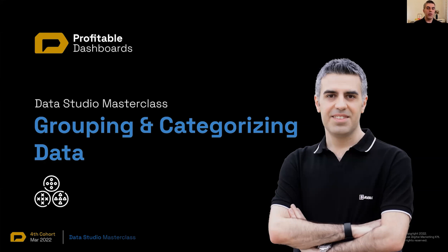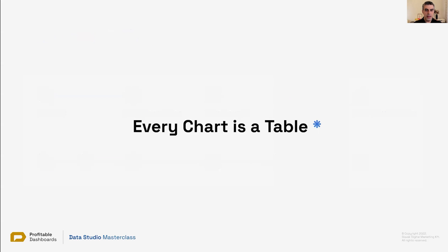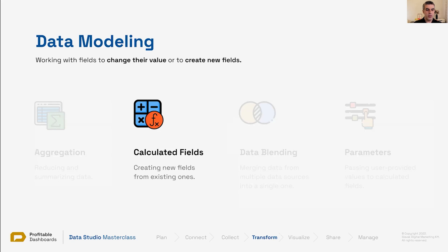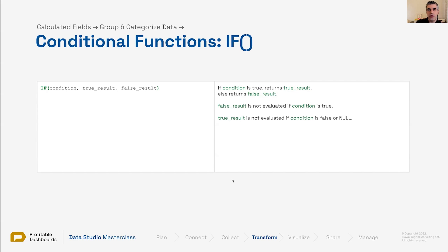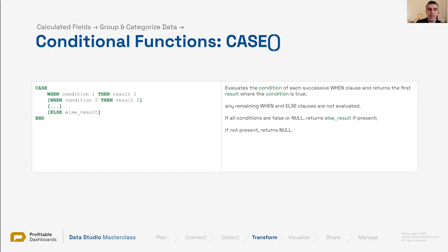Data Studio Masterclass: grouping and categorizing data. Everything and every chart in Data Studio is a table — we're all only working with tables. We model our data in tables; when we're done and happy with the result, we connect them to the chart. We're talking about calculated fields. Even if we group and categorize data, we are creating a calculated custom field — a group — and we'll see how that works. The two conditional functions in Data Studio that help us group and categorize data are the IF function and the CASE function.